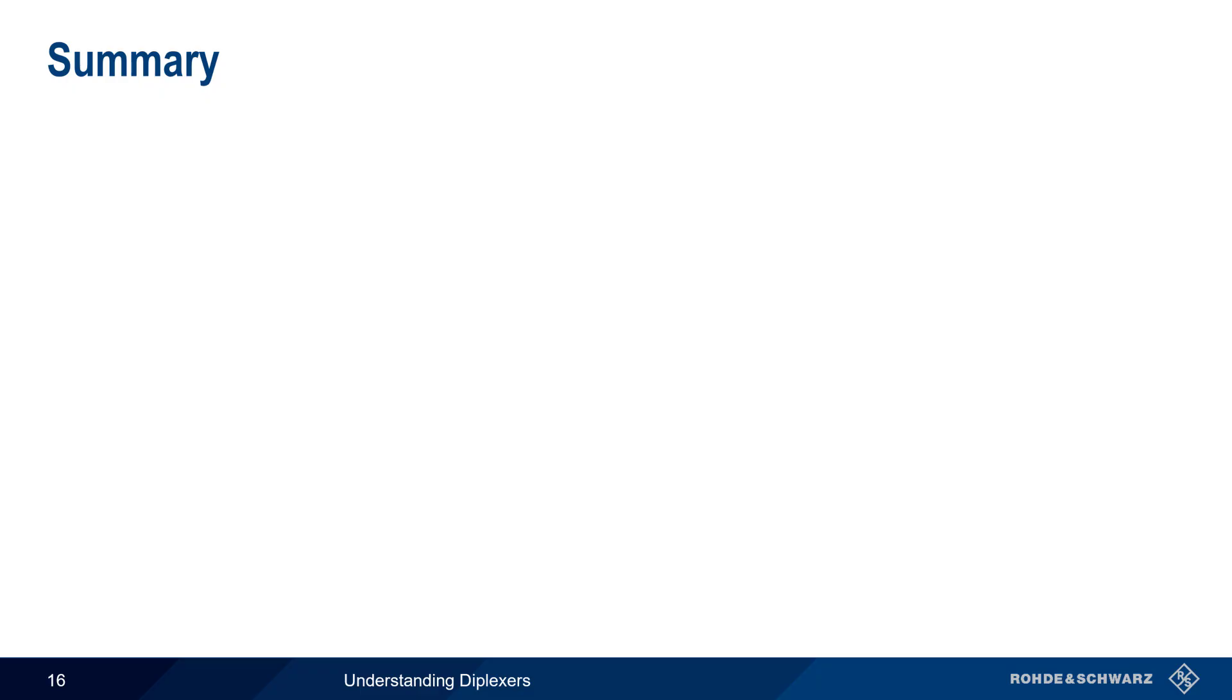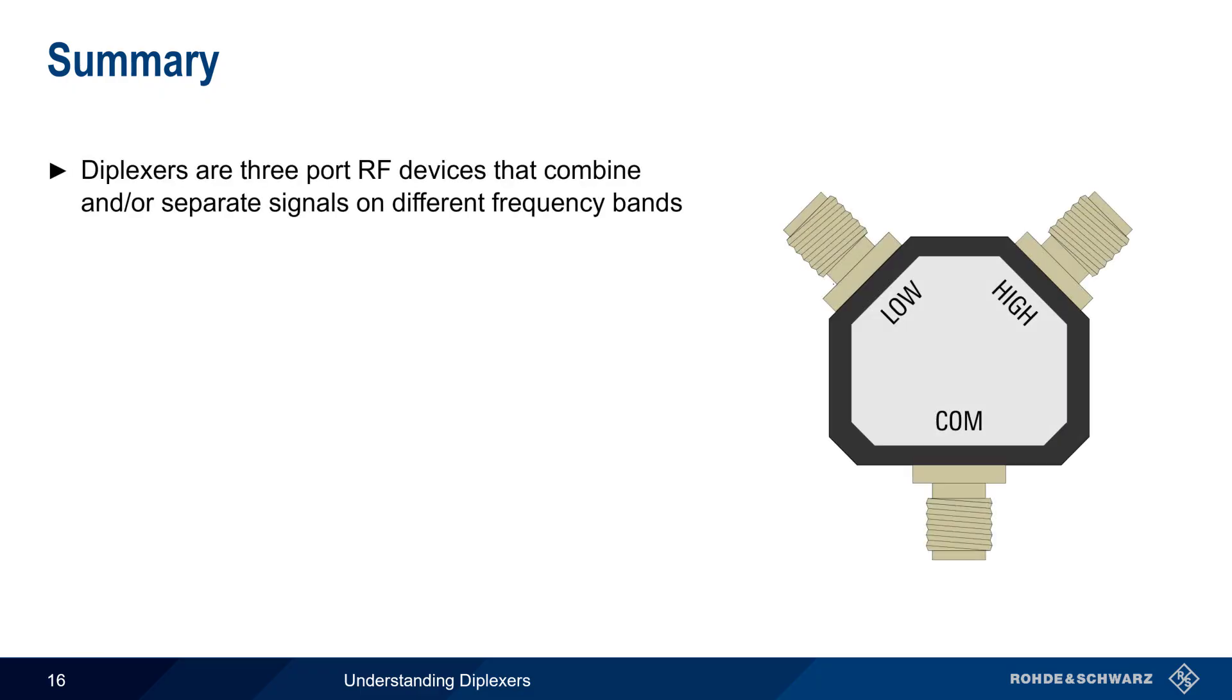Let's end with a brief summary. Diplexers are three-port RF devices which combine and or separate signals on two different frequency ranges or bands. They consist of a low-pass port, a high-pass port, and a common port which passes the combined high and low signals.